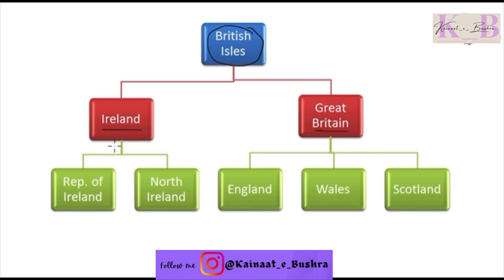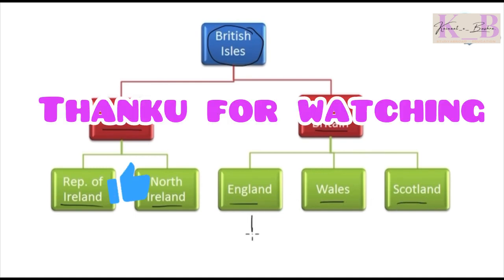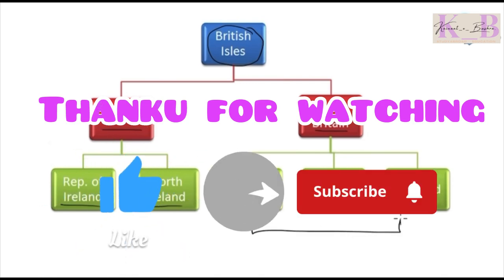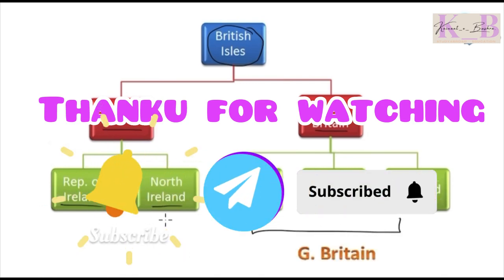Ireland consists of two countries: the first one is the Republic of Ireland and the second is Northern Ireland. Great Britain consists of three countries: England, Wales, and Scotland. So these three countries together form Great Britain, and when we combine Northern Ireland with Great Britain, it becomes the United Kingdom.